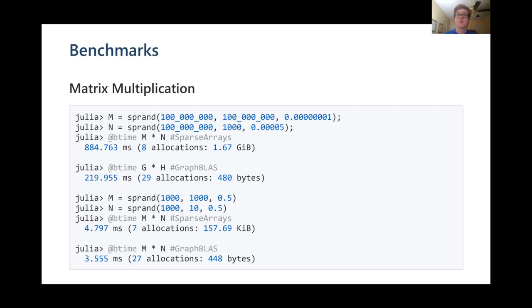Matrix multiplication either matches or outperforms base and sparse arrays on every matrix structure, sometimes being well over five times faster, while being much more general. It takes advantage of threading, unlike Julia's current sparse arrays standard library.